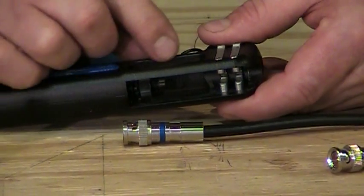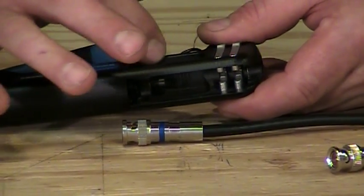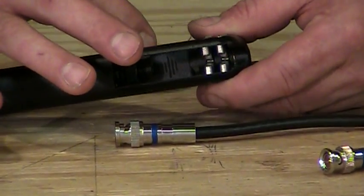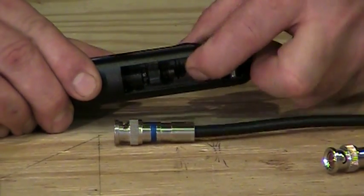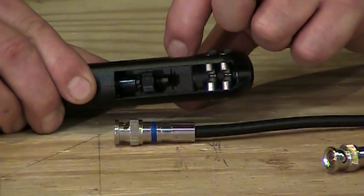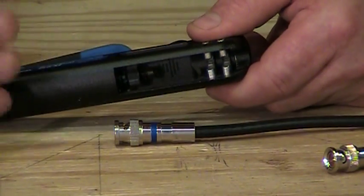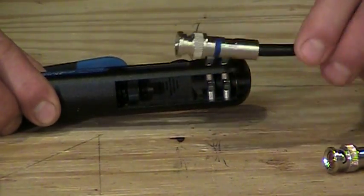And again, with the Ideal product line, you'll see that there's little gradients, little markings inside the tool there. And the large marking, when I move the ram all the way forward, it should be even with that largest marking you see inside here. And then I know that's ready for any of Ideal's connectors.